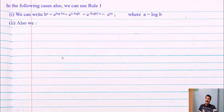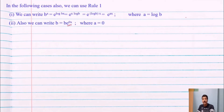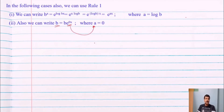Second case: a constant b equals b · e^(0·x), since e^0 = 1. So every constant — 2, 3, 5, 7, or 1/2 — can be written as b · e^(0x), and by rule number one, D is replaced by a = 0.